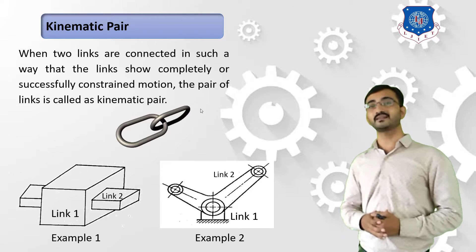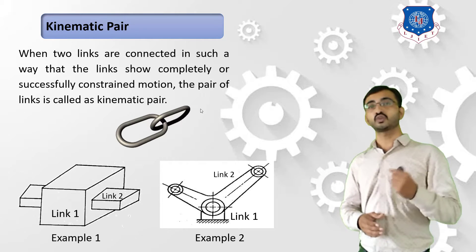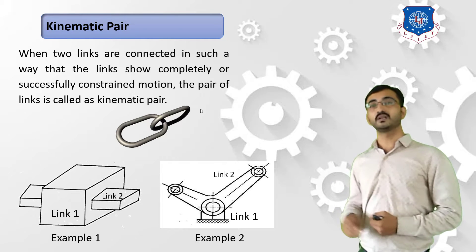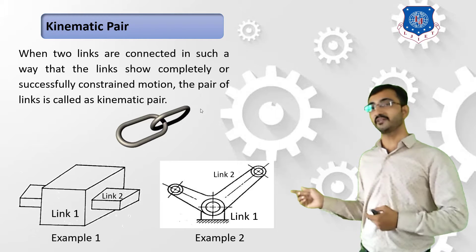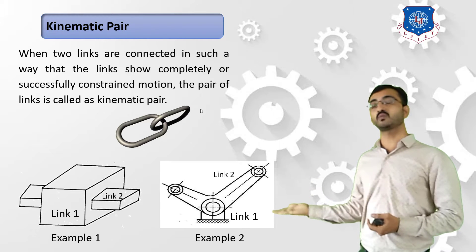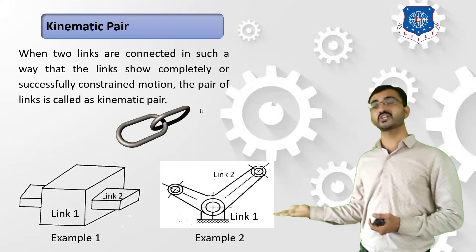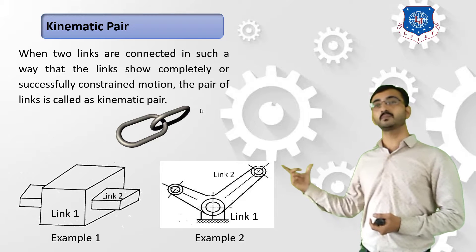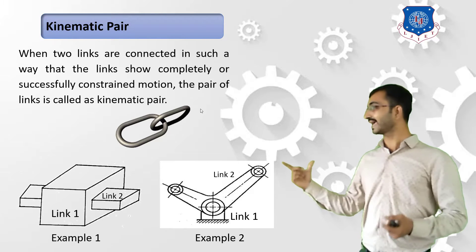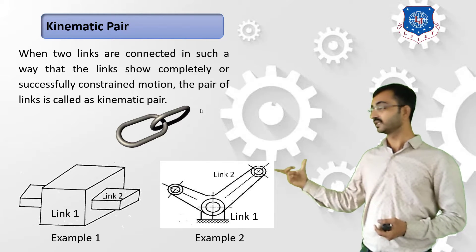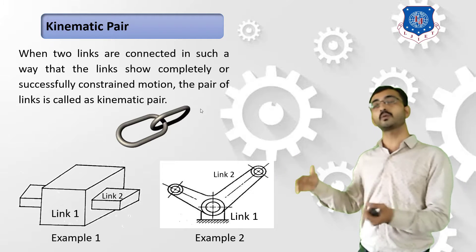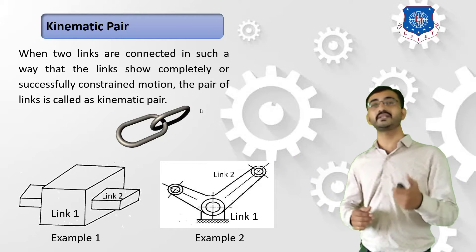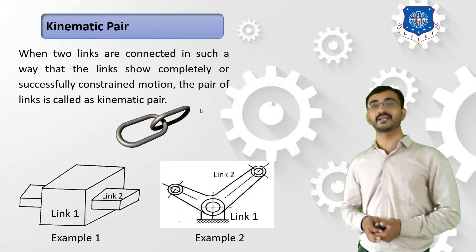Let's refer to the second example. In the second example, link number one is a fixation. Now with respect to this fixation, link number two, that is your L-shaped link, can rotate. So these two combinations can be termed as a Kinematic Pair.